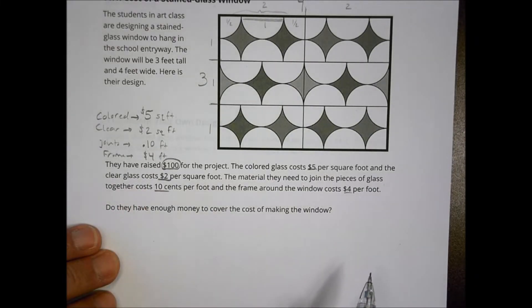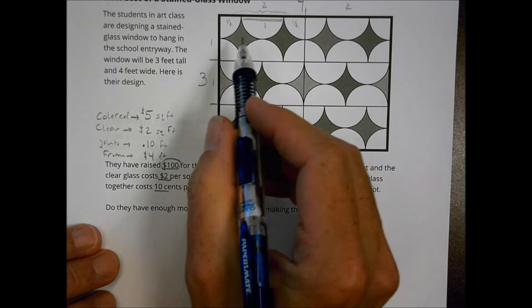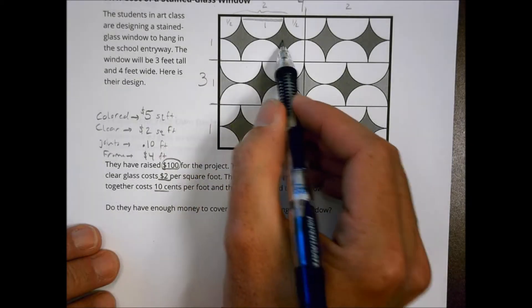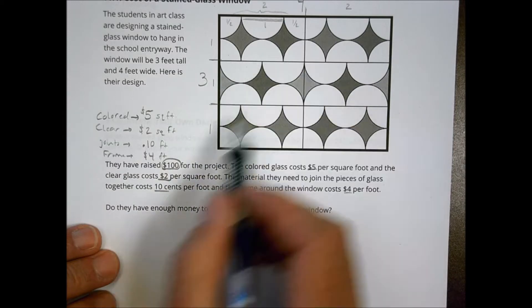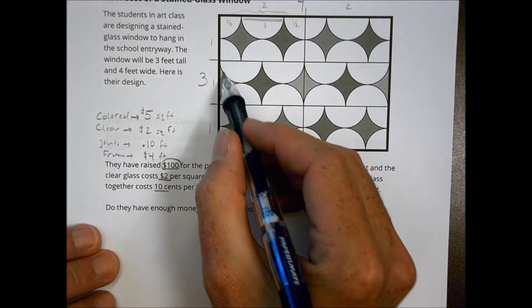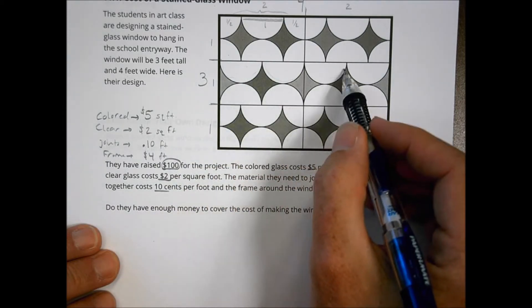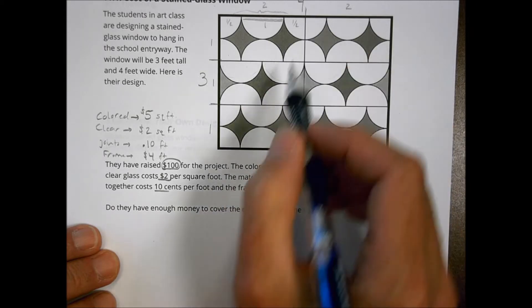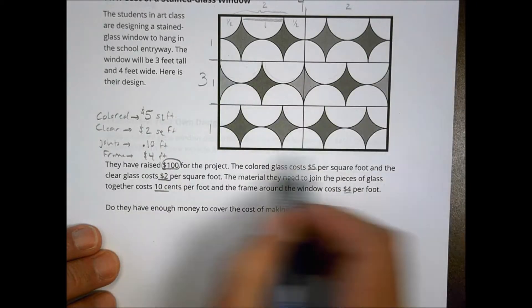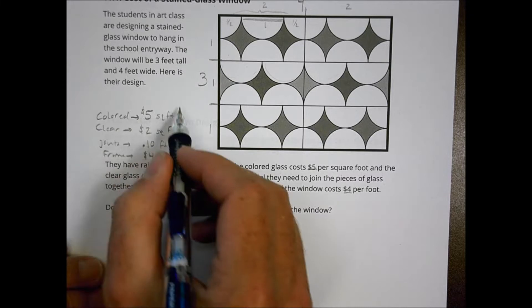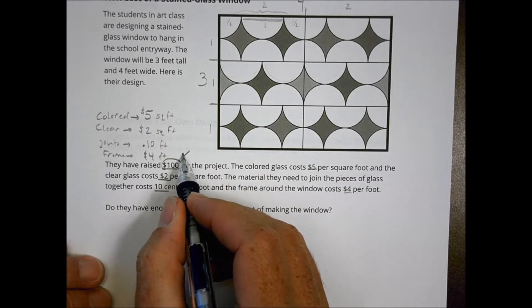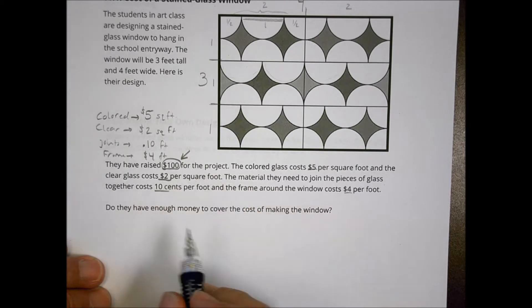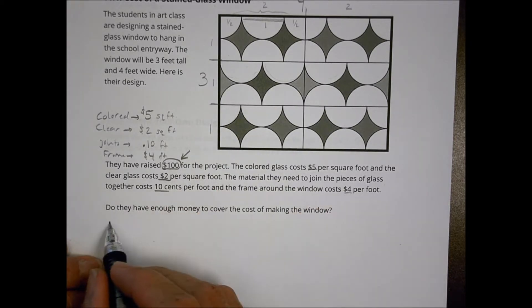Okay, so we have lots of different elements here. We have the colored glass, which is going to be the dark pieces here. And we have the clear, which is the white. We have the joints, which are these little pieces inside of the frame. And then we have the frame itself all around. So those things all have to be combined together to find a total cost, and we need to decide if that total cost is going to be greater than or less than the amount of money that they have raised. So let's take a look at some simple ones first of all.